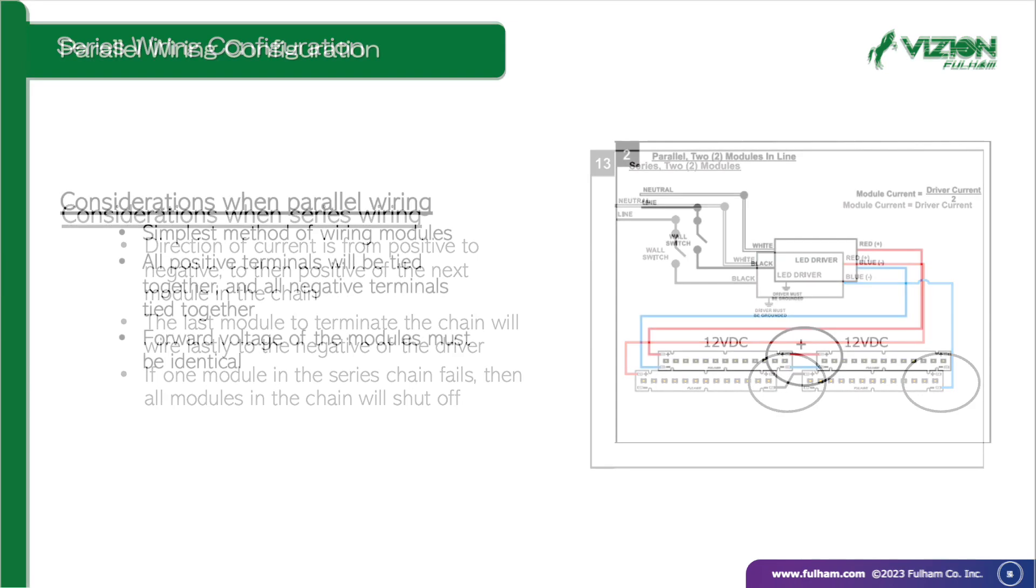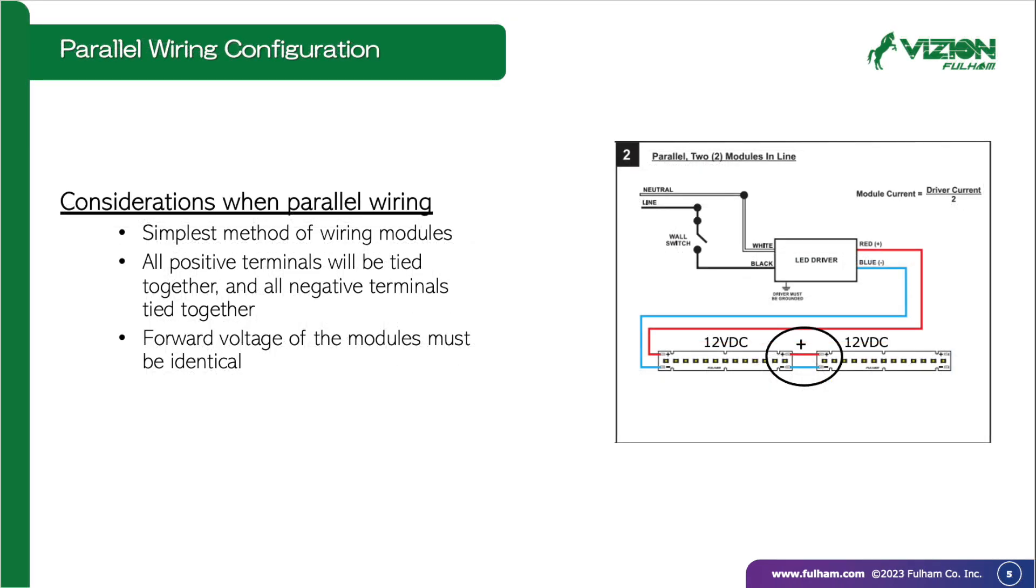Parallel wiring configurations are the simplest form of wiring, since all positive terminals and all negative terminals of the modules and drivers will be tied together. In this wiring configuration, voltage must be identical in the modules to ensure proper current distribution amongst them.